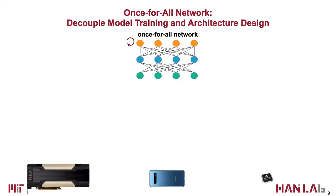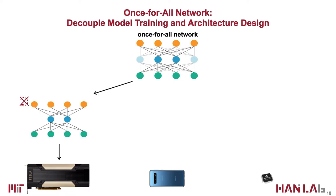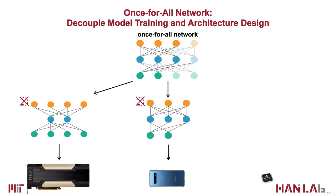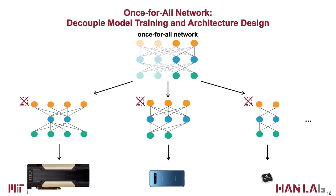The idea is to decouple model training from architecture search. In the model training stage, we train a single Once-for-All network that supports all of the architecture configurations in the design space. In the deployment stage, we can directly grab the subnetwork that fits a given hardware without retraining. This process can repeat many times to get specialized neural networks for many different hardware platforms without retraining.